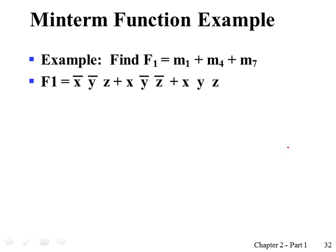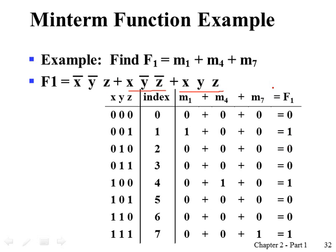Using minterms and maxterms we can express any Boolean function. For example, Boolean function f1 can be represented with all three minterms, which is equivalent to this because minterm index one is a NOT x, NOT y, and z in true form. Minterm index four is this, minterm index seven is this. You can clearly see the relationship by having a sort of truth table.